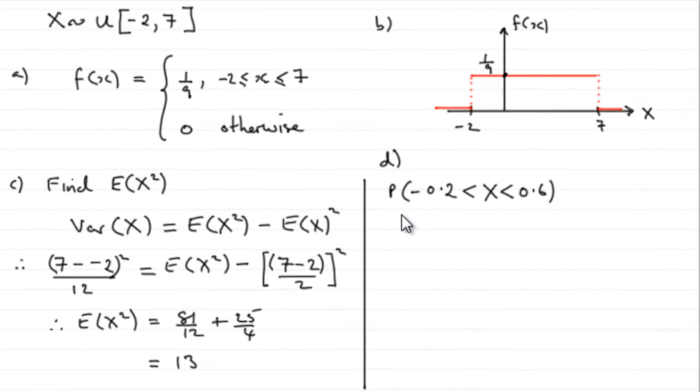Now for the last part, Part D, we've got to work out the probability that our random variable X lies between -0.2 and 0.6.